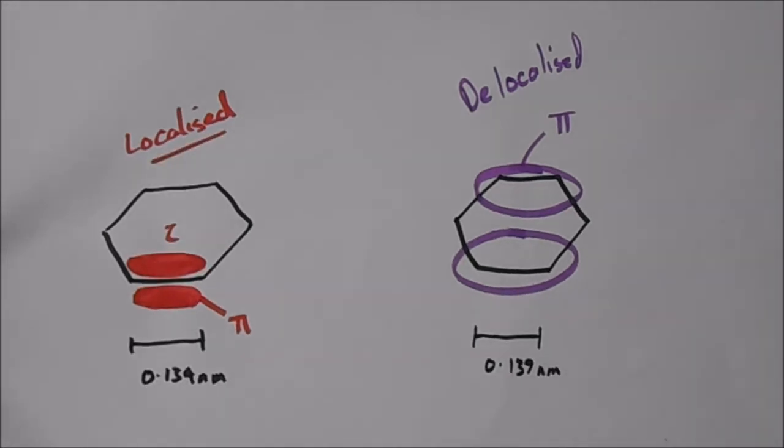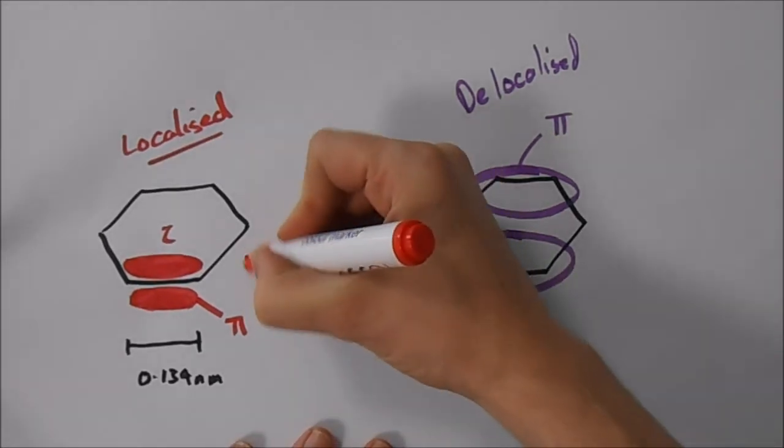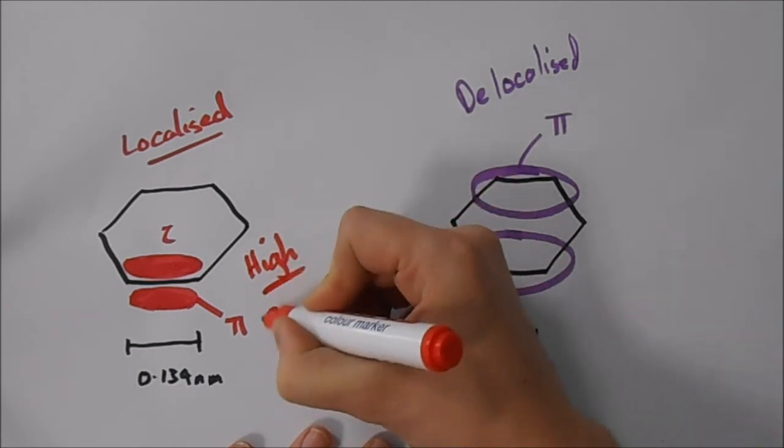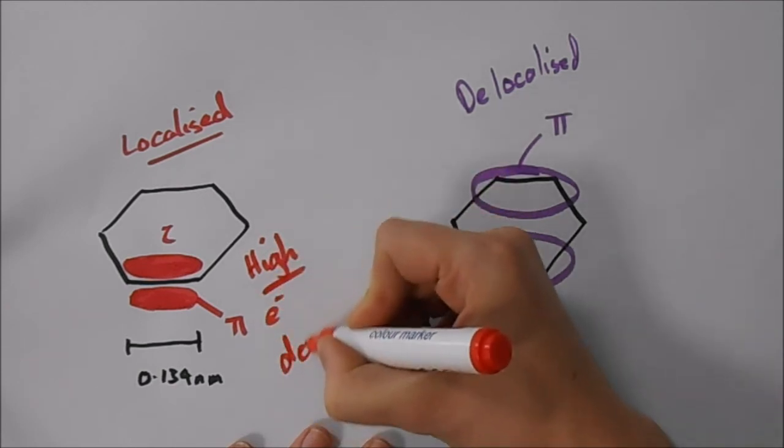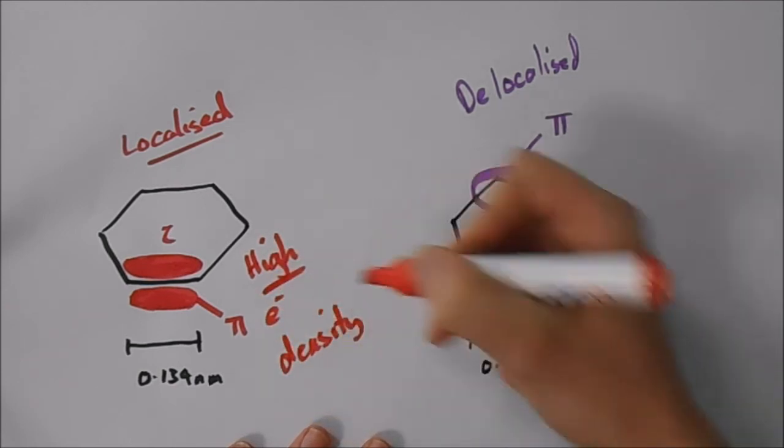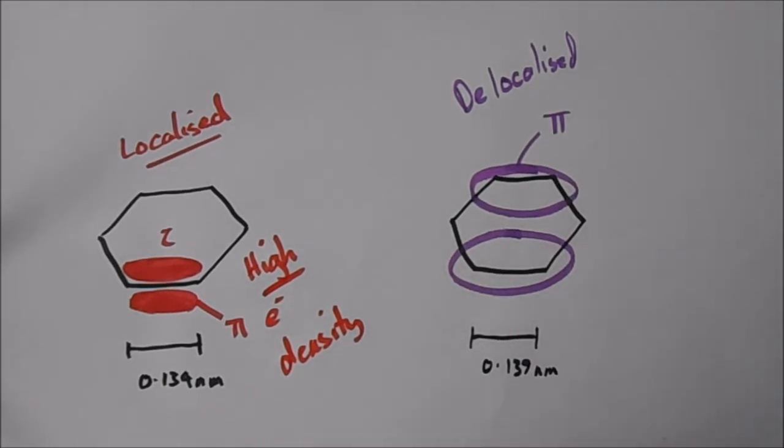So we have high electron density, which allows it to polarize molecules.